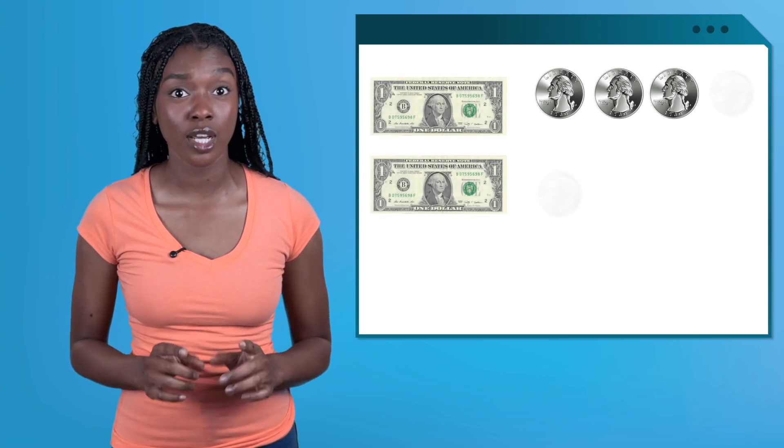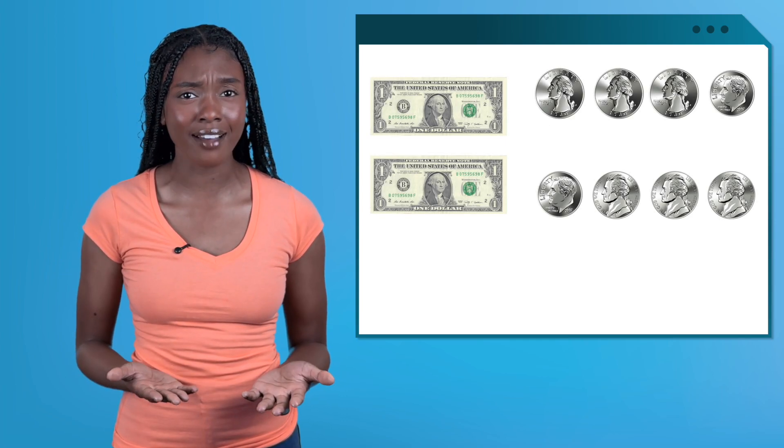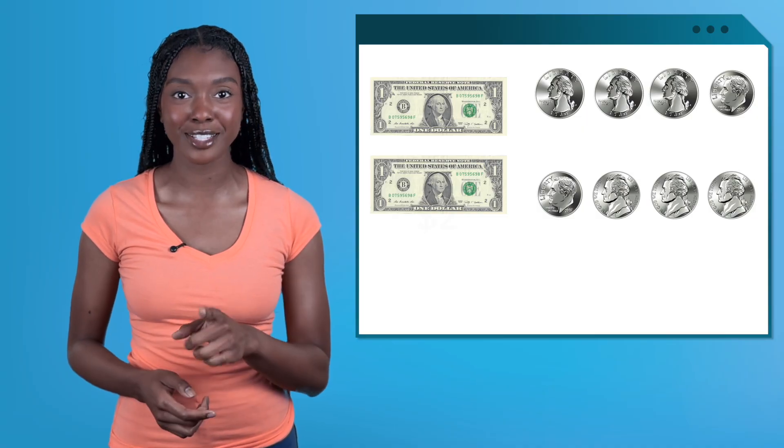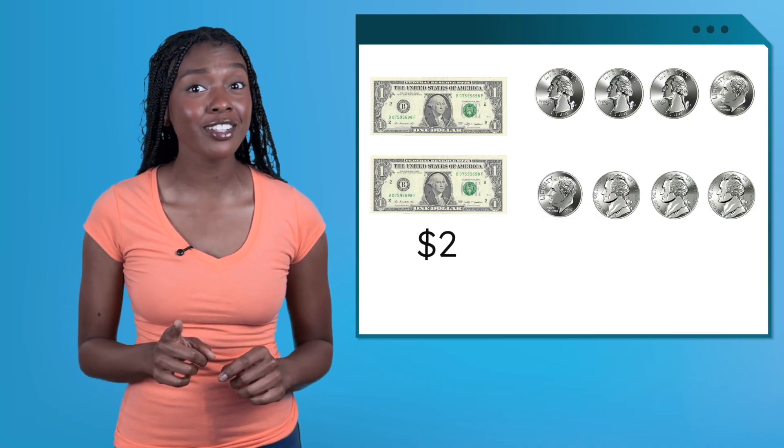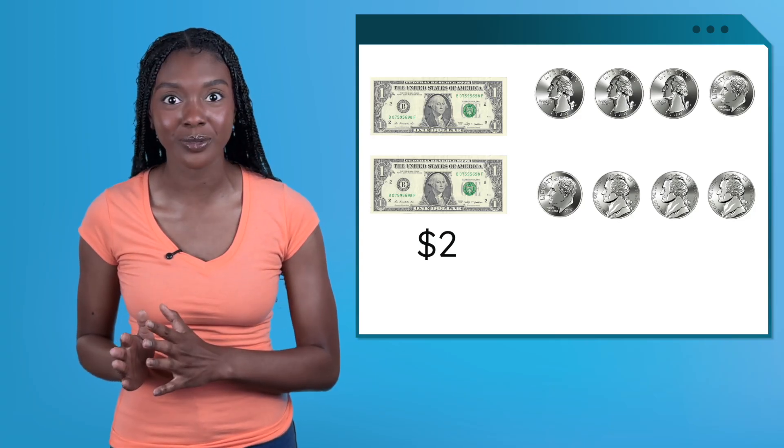Awesome job combining dollars and cents. It's time to put our practice to the test. Let's go back to our quest and see if we have enough money to play race car rally. This time we have two dollars, three quarters, two dimes, and three nickels. How many dollars do we have? Yes, two. Pause the video and count, beginning with the coin with the greatest value: quarters.